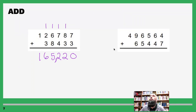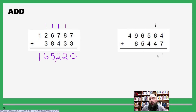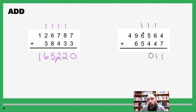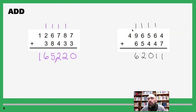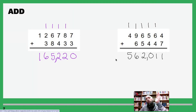Let's do another one. Four plus seven is eleven — carry the one. One plus six is seven, seven plus four is eleven — write down the one, carry the one. One plus five is six, six plus four is ten — write out the zero, carry the one. One plus six is seven, seven plus five is twelve — write out the two, carry the one. One plus nine is ten, ten plus six is sixteen — write out the six, carry the one. One plus four is five — write out the five. One-two-three digits, comma, one-two-three digits. That gives us 562,011.